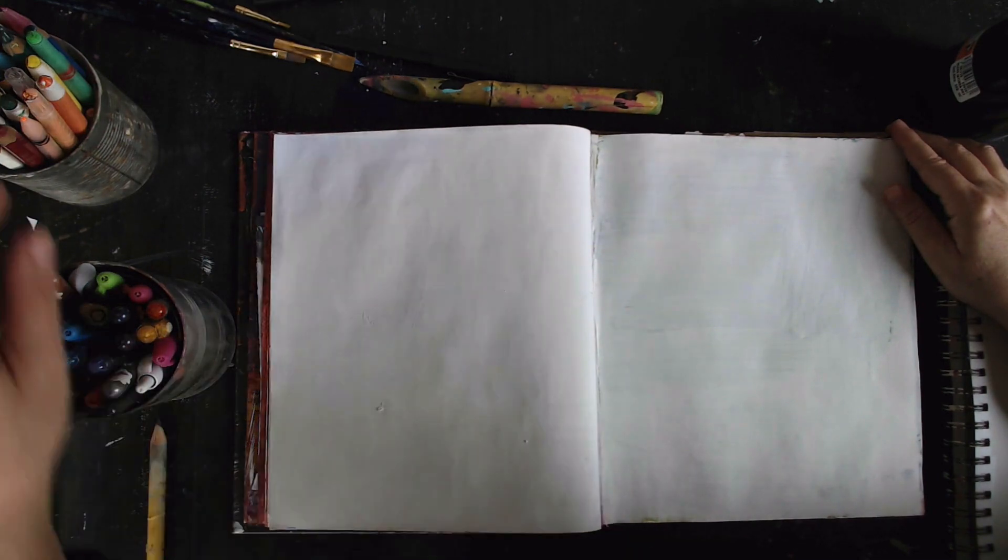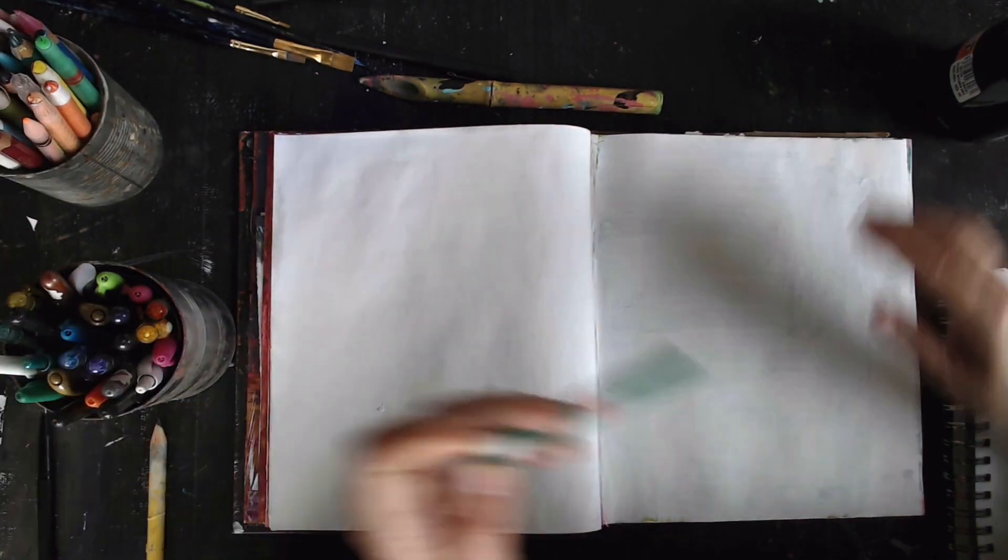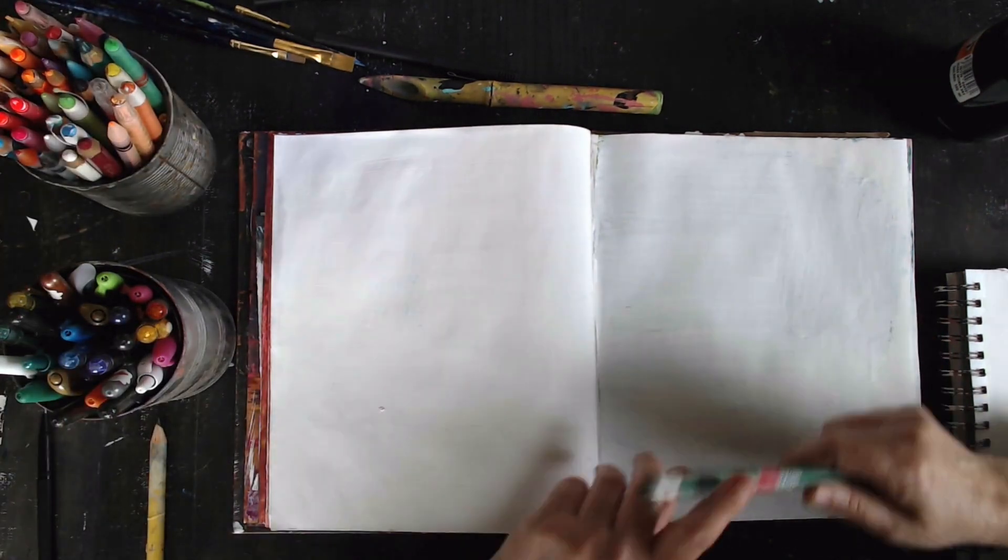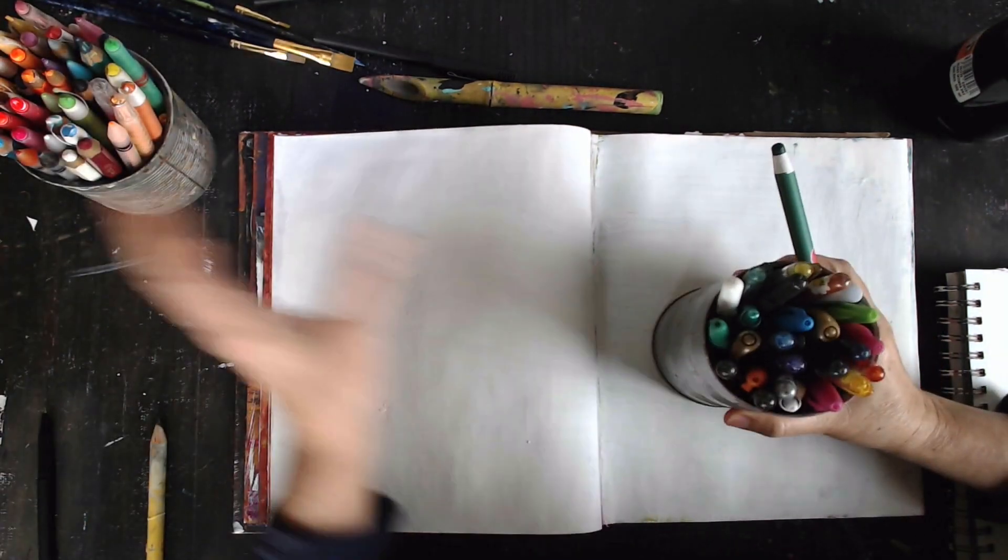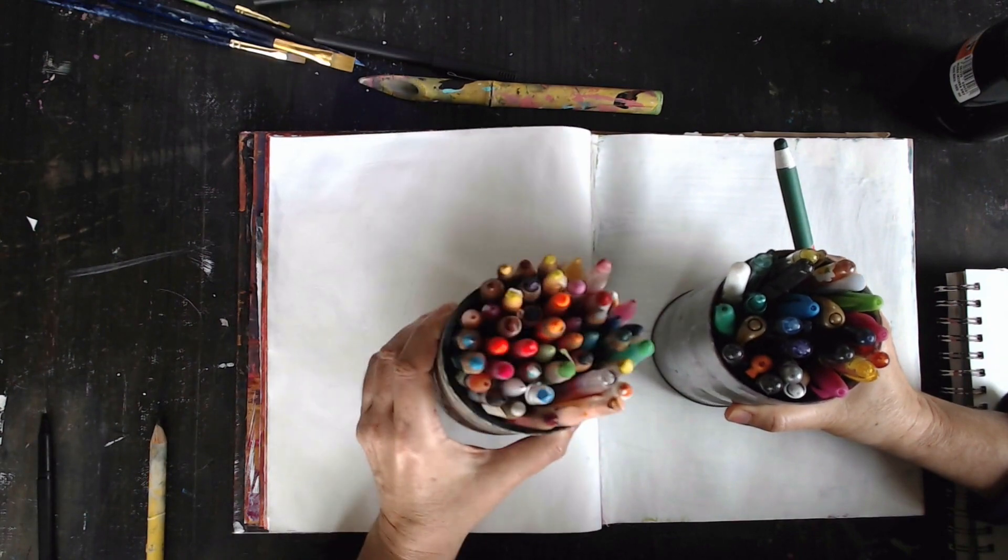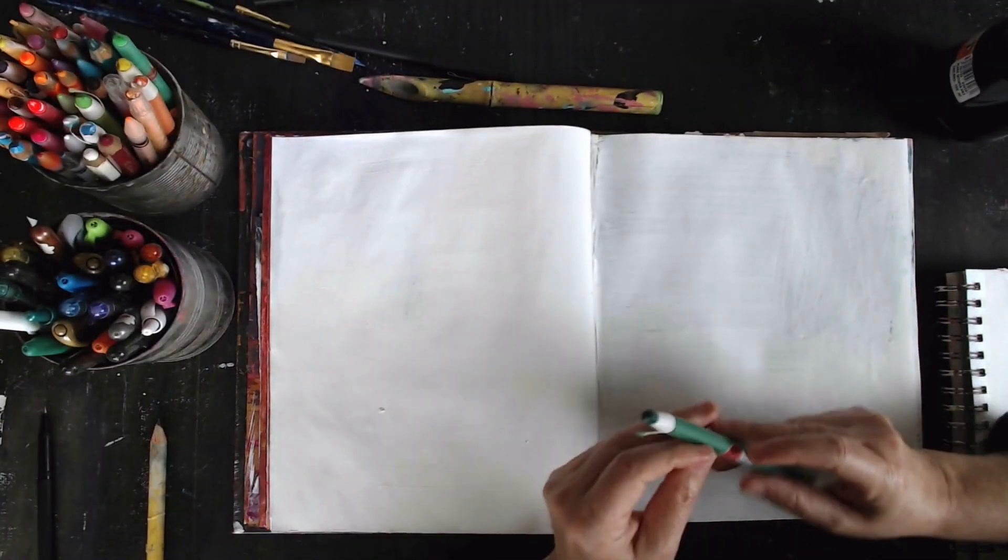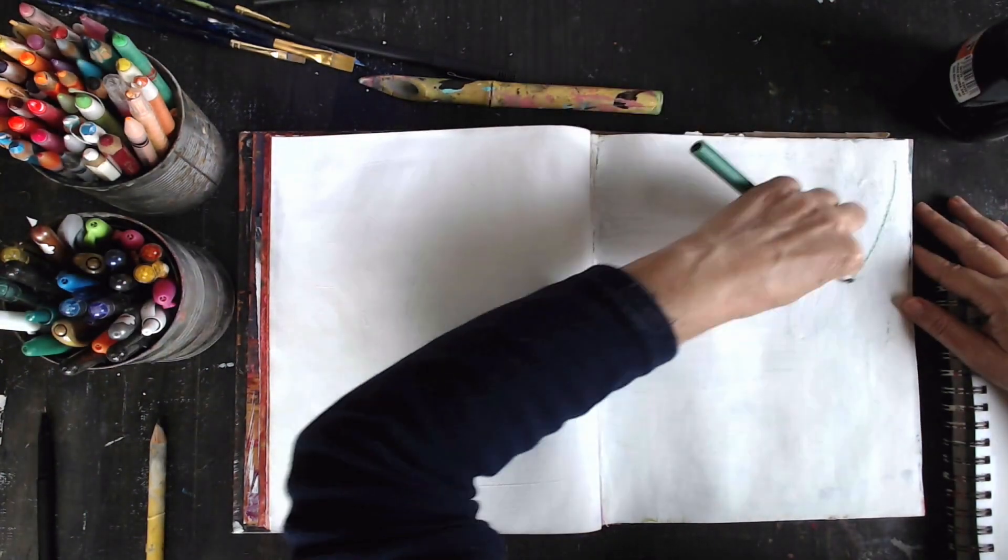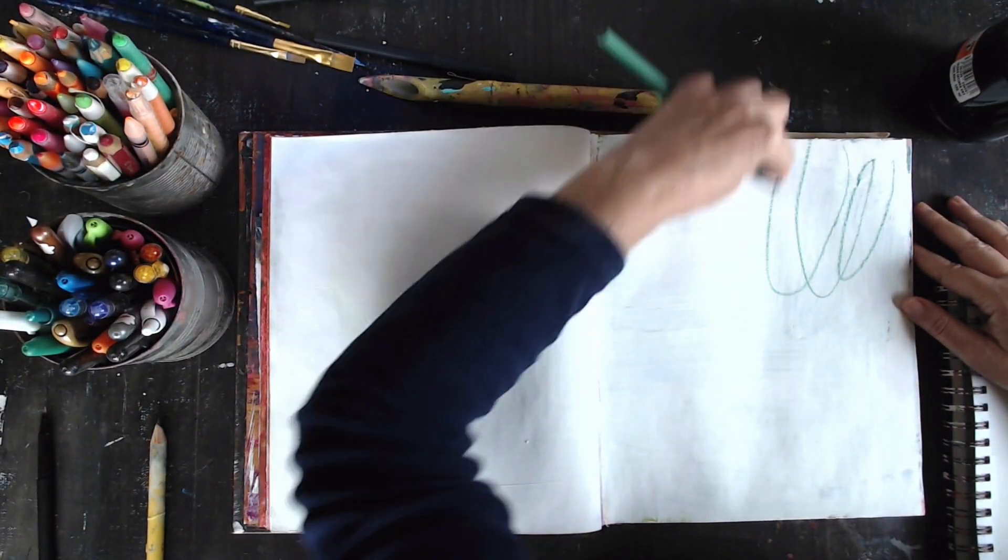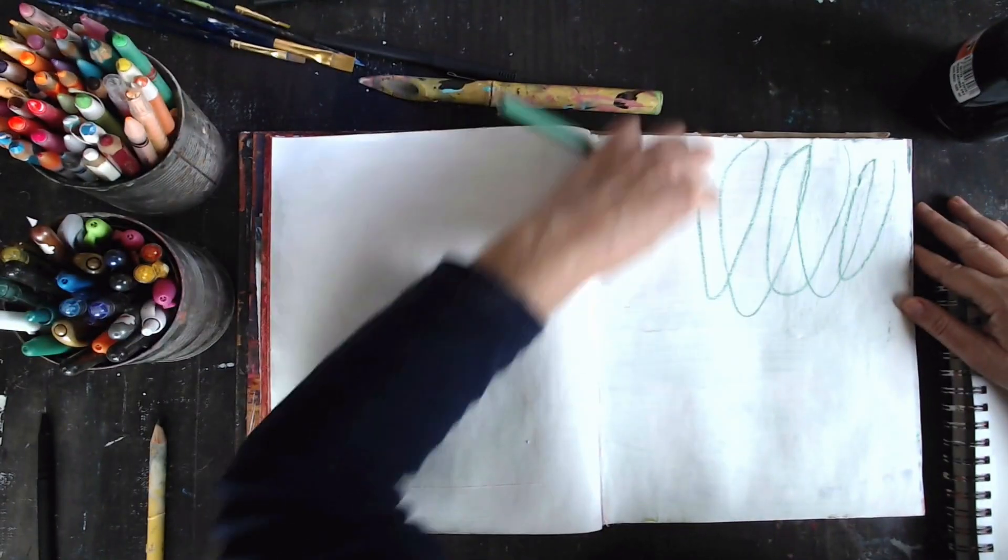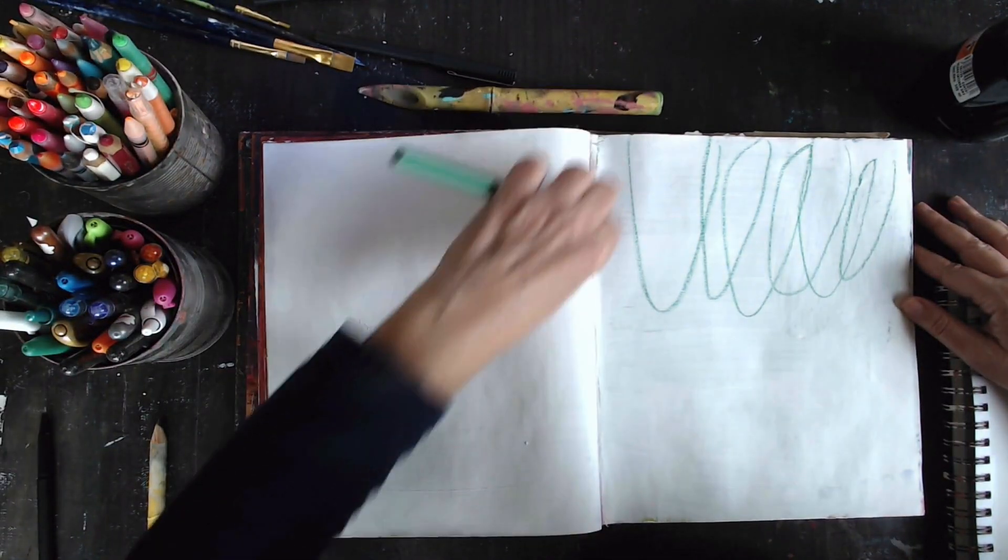So where I would start with this is with some simple mark making. Here I have some colored pencils and crayons that I just keep handy on my table. I would begin with just making some marks. I happen to love scribbling and abstract mark making.